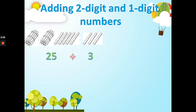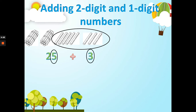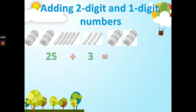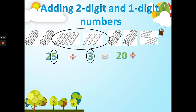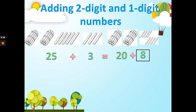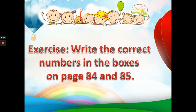Now we are going to add. First we are going to add the sticks not in bundles. We have five sticks and three sticks, so five plus three equals eight. We have two bundles which equals 20, plus eight sticks equals 28. Very good.